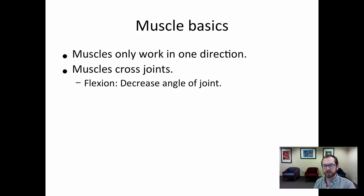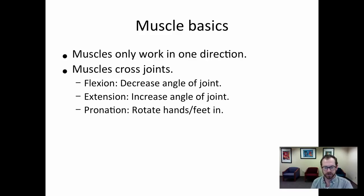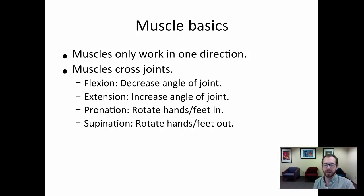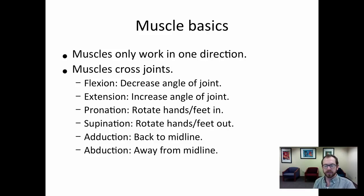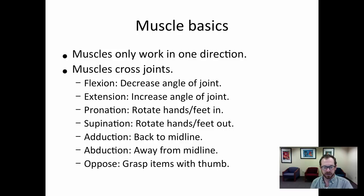If you recall from AV lecture 12, flexion is a decreasing of a joint angle, and extension is the increase of a joint angle. Pronation is when you rotate your hands or feet in, and supination is when you rotate your hands or feet out. Adduction is moving back to the midline, abduction is moving away from the midline, and opposing is your ability to grab something using your thumbs. These actions are going to be really important for all these muscle labs.